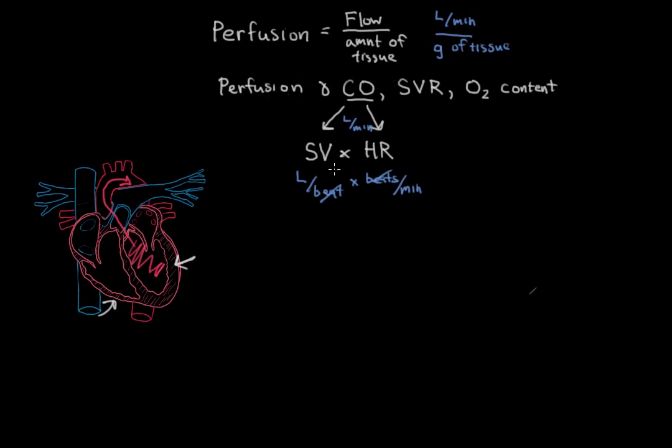Now heart rate is fairly self-explanatory. This can increase or decrease based off input from the nervous system. But stroke volume, let's break this down a little bit further. Stroke volume can be broken into three different parts. Preload, which is the amount of blood that's in the heart at the beginning of a contraction. So it's blood that is loaded in the heart before, or pre-contraction, before it squeezes.